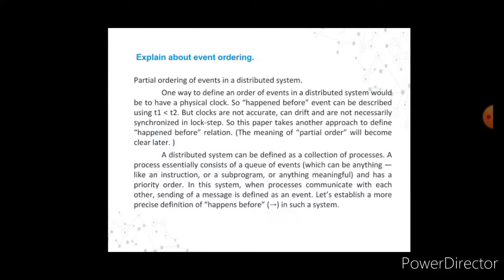In partial ordering of events in a distributed system, one way to define an order of events would be to have a physical clock. The happened-before relationship can be described using T1 less than T2. But clocks are not accurate, can drift, and are not necessarily synchronized in lock step. So this approach takes another way to define the happened-before relationship.